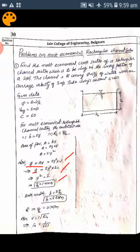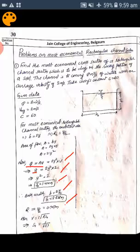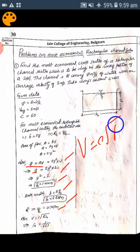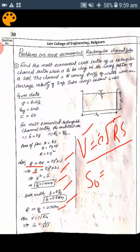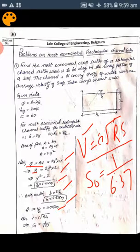Since B = 2y, substituting the value of y gives us the channel bottom width. We also calculate the hydraulic radius R = y/2. Then, using Chezy's formula V = C√(RS), and substituting the values of V, C, and R, we get the bed slope. Here we have got the bed slope as 1 in 6. This is how the conditions are utilized in this problem.